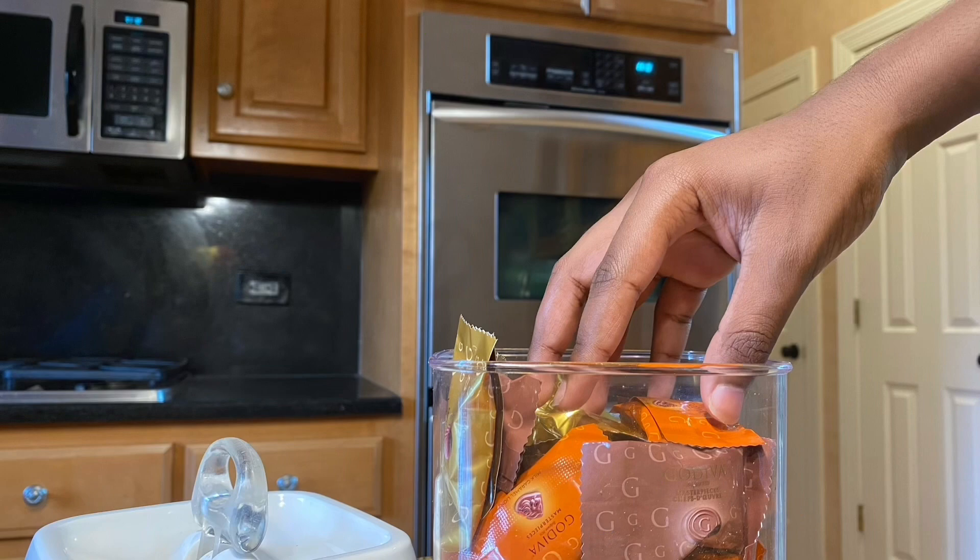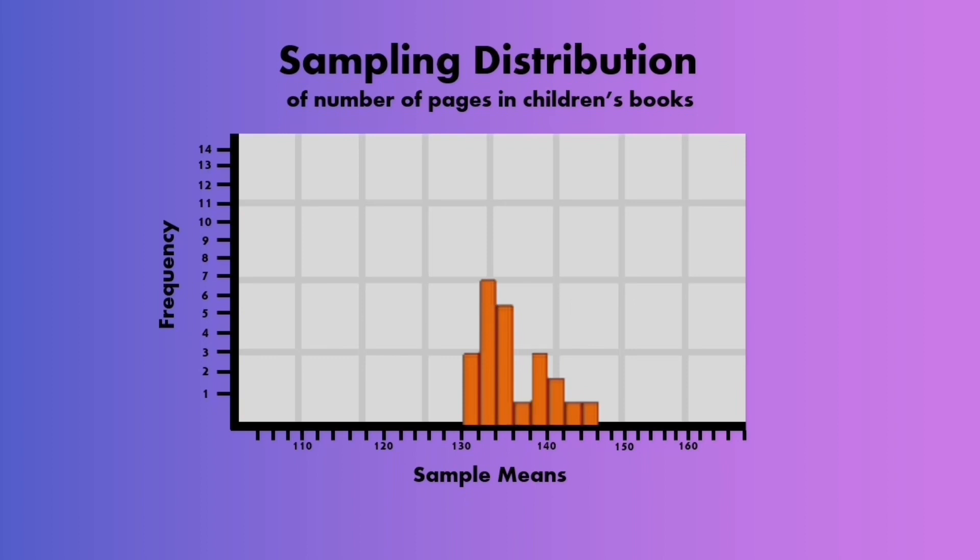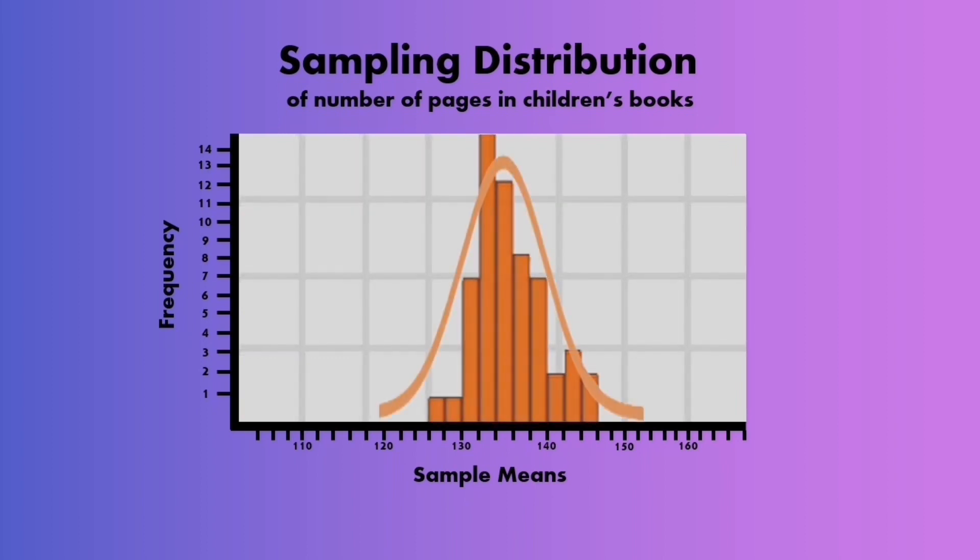It's kind of like repeatedly taking and putting back a handful of candy from a jar. As we plot more of these sample means, the sampling distribution starts to look like a bell-shaped curve, also called a normal distribution.